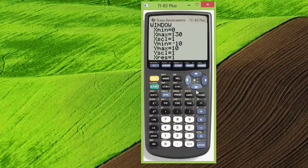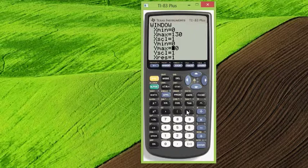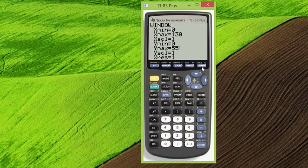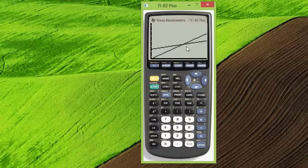And then the y values go from 0 to about how high? 55. Okay, so we graph that, and there's our intersection point, right?